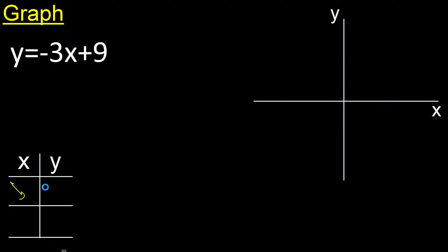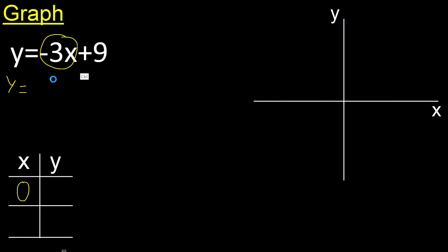Here any number or here any number. For example, x is 0. Y: minus 3 multiplied by 0 is 0. 0 plus 9 is 9. 9.